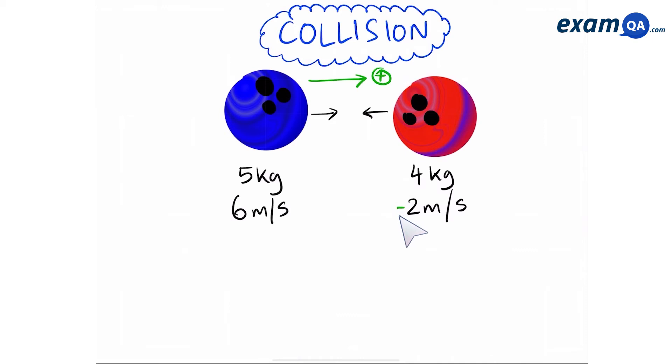So the total momentum is going to be the sum of all the momentums that you see over here. Let's start by calculating the momentum of the blue ball and adding it to the momentum of the red ball. Remember, to calculate momentum we're going to do mass times velocity. So the momentum of the blue ball is going to be 5, which is the mass, times velocity, which is 6. That gives us a total momentum of 30 kilograms meters per second.